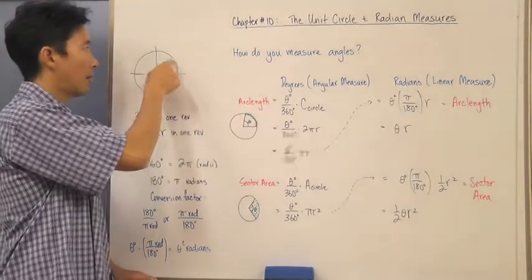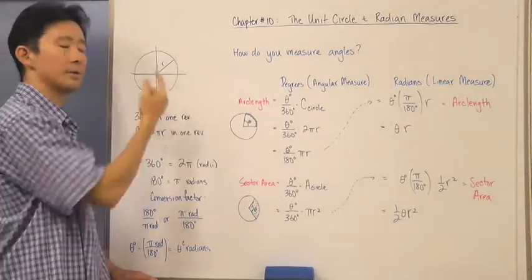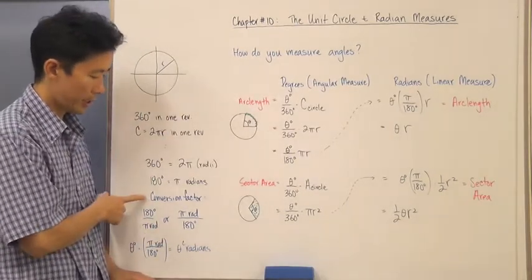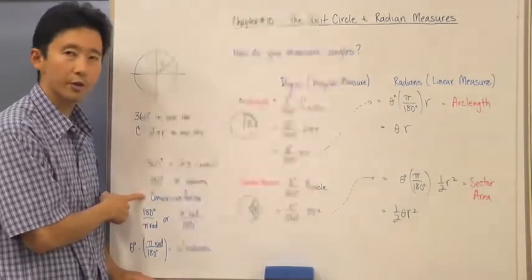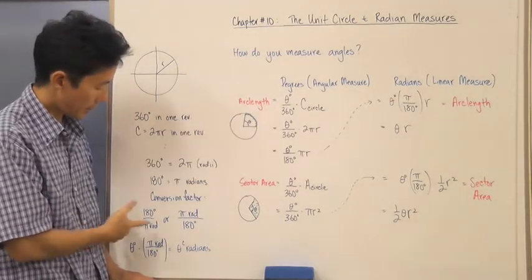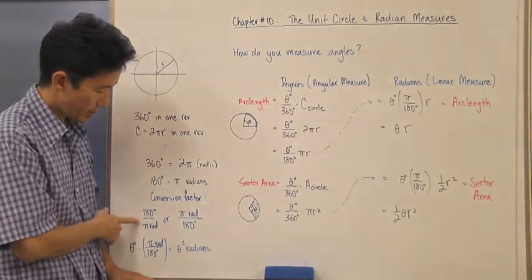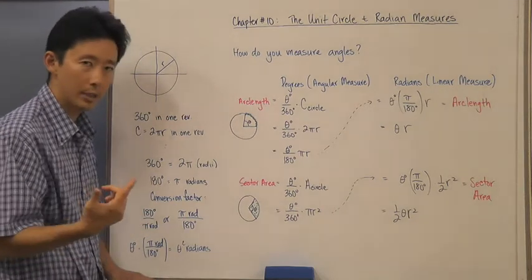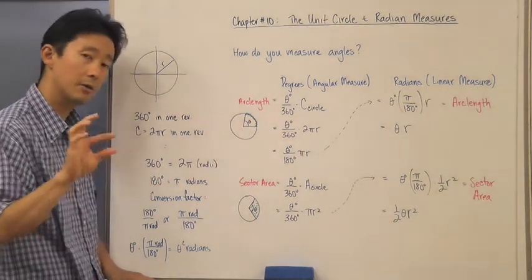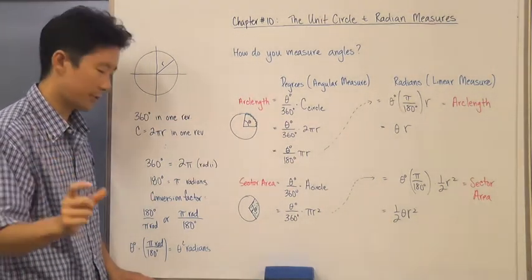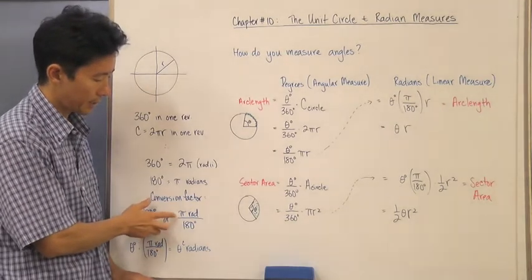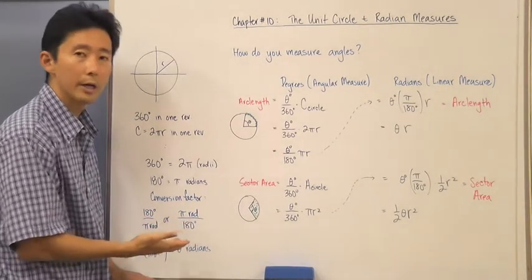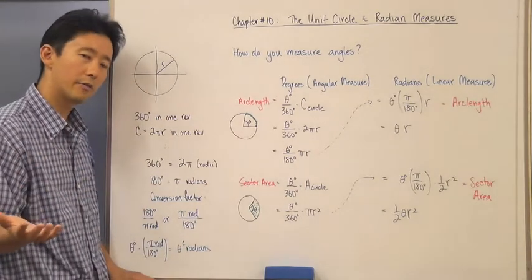So if I go 180 degrees, I've actually covered 3.14 radii along the circumference of the circle. That means we can generate a conversion factor: 180 degrees divided by pi radians equals one, because they refer to the same thing even though the units of measure are different. Or we can say pi radians over 180 degrees equals one.